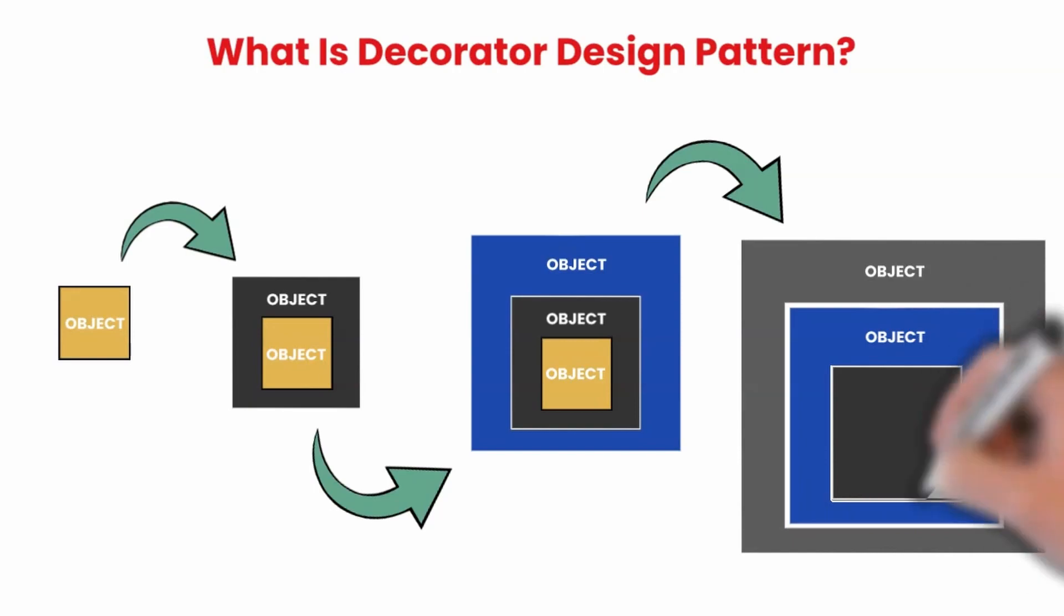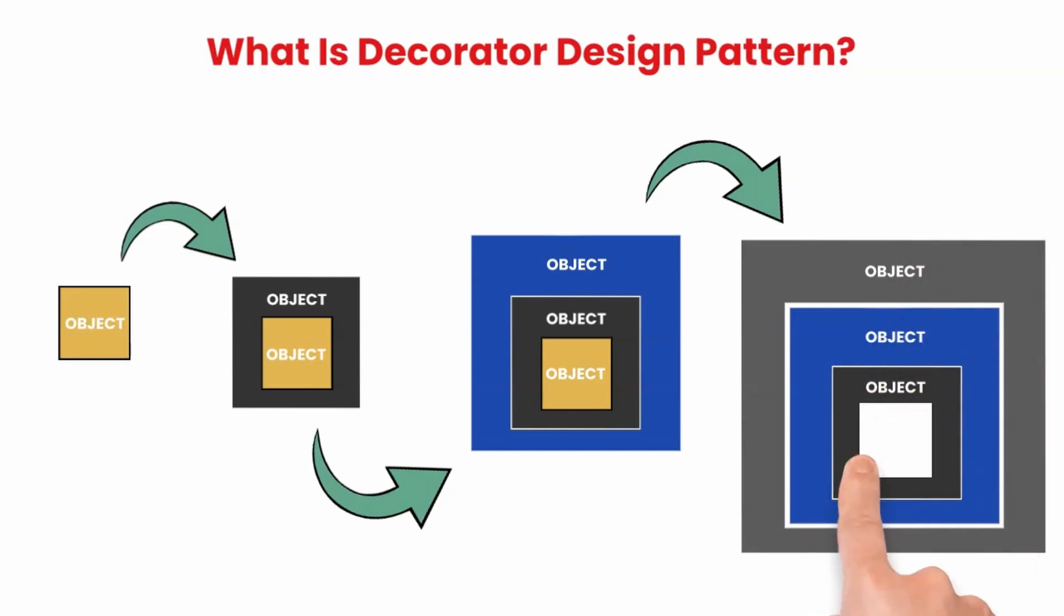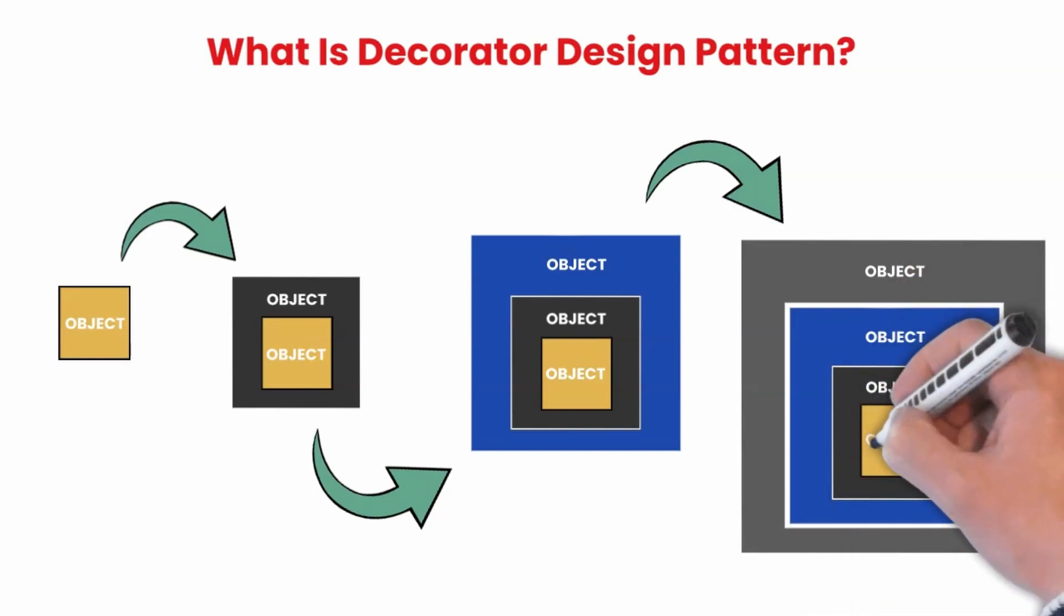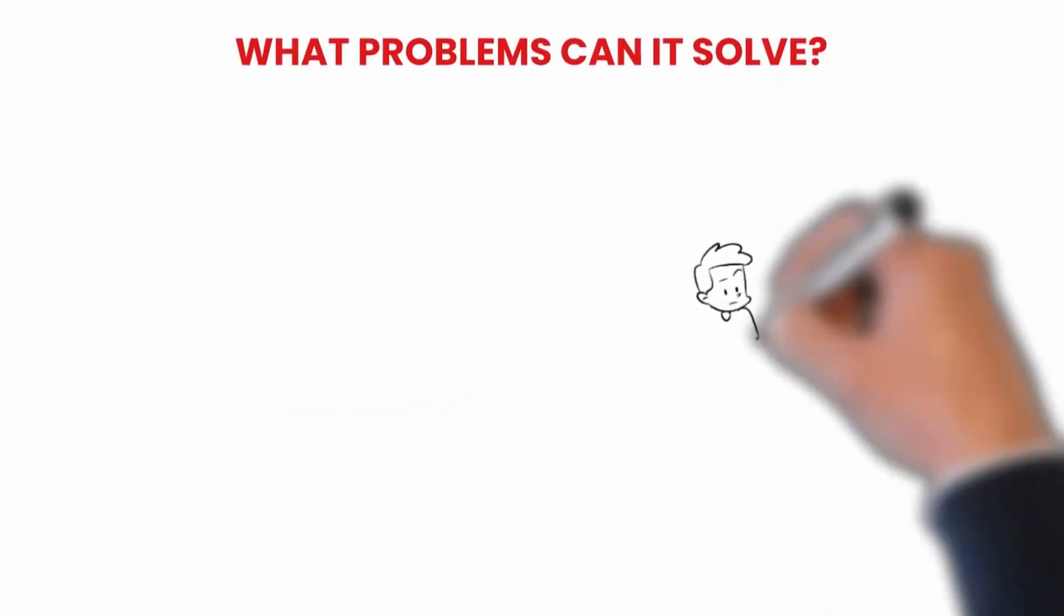Decorator use can be more efficient than subclassing, because an object's behavior can be augmented without defining an entirely new object. What problems can it solve?